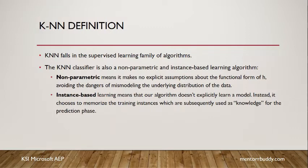The KNN algorithm works with two principles. The first is nonparametric — it does not assume any functional form of the dataset. For example, linear regression assumes the data should be linear. If we feed nonlinear data into linear regression, it won't work. KNN does not assume any functional form, making it much more usable for nonlinear cases.